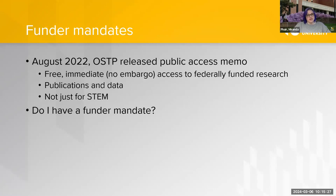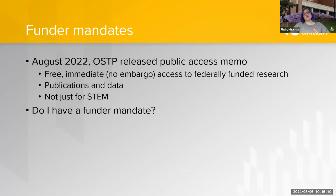Another reason to publish open access is a funder mandate. In August 2022, the White House Office of Science and Technology Policy released the Public Access Memo — often called the Nelson Memo — requiring that federally funded research be freely and immediately accessible to everyone, with no embargo, by the end of 2025. This applies to both publications and data, and not just STEM — it also covers things like National Endowment for the Arts grants.